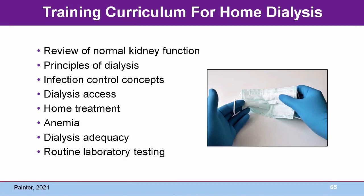Home treatment requires that patients learn the home dialysis modality of choice including treatment schedule, procedures, administration of intravenous or intraperitoneal medications, management of problems and complications, maintenance of home treatment records, ordering and inventory of supplies, equipment maintenance, disinfection, and waste disposal. Since anemia is a problem for all CKD patients, lab tests are done routinely. A patient may choose to learn how to self-administer erythropoietin stimulating agents or may choose to come to the dialysis unit for administration. IV iron is usually given at the clinic during the patient's monthly visit.